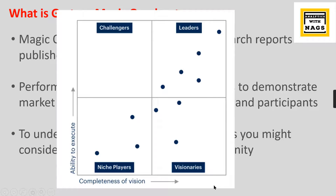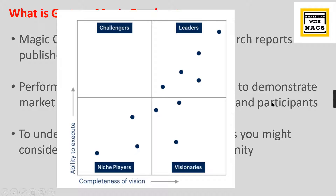You can see here how the Magic Quadrant looks. They place different providers — for example, in data analytics, reporting, or business intelligence, Microsoft is placed as a leader. There are other companies like Tableau, Qlik, Looker, and IBM, which provides its own analytics and BI platform. The two axes represent completeness of vision and ability to execute — how well a provider executes against their stated vision.